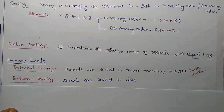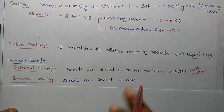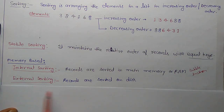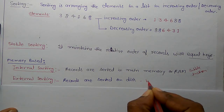In external sorting, you use a disk for sorting elements. This involves secondary storage devices like a hard disk or pen drive. If the data is large enough that you can't sort it in RAM, you require secondary storage, and that sorting is known as external sorting — for example, external merge sort.